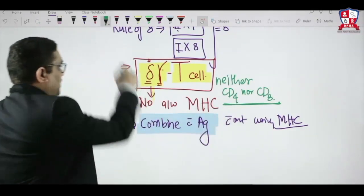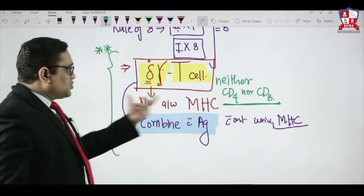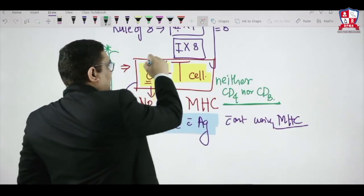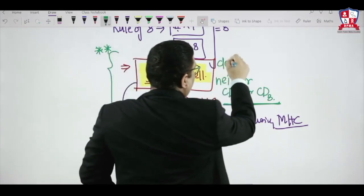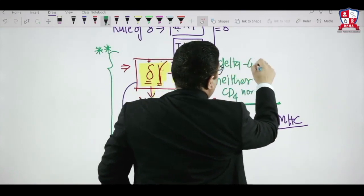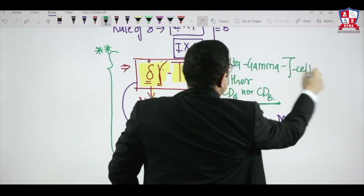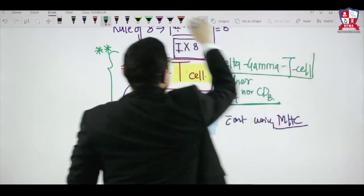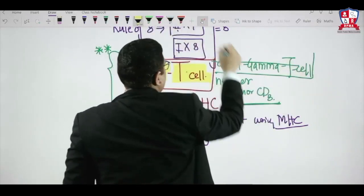So this was the question in this AIIMS exam. That is why it is very important to understand this new type of T cell which is called as delta gamma T cell. This was the question in this AIIMS exam and May AIIMS exam. So we must remember this point.